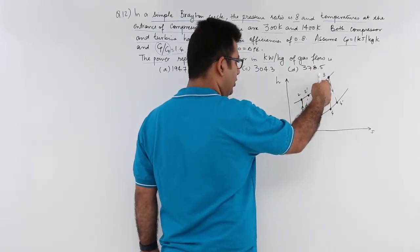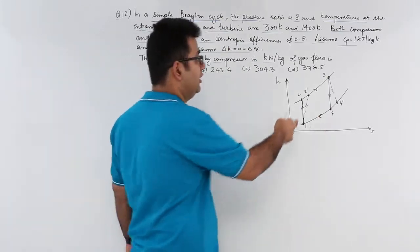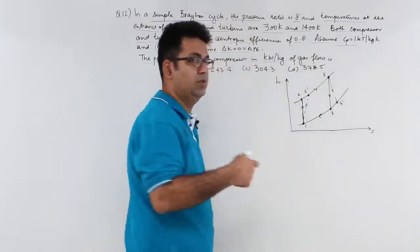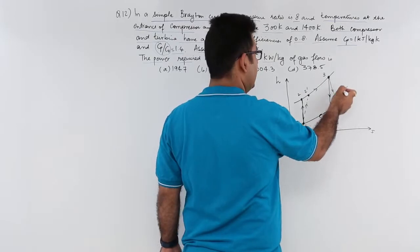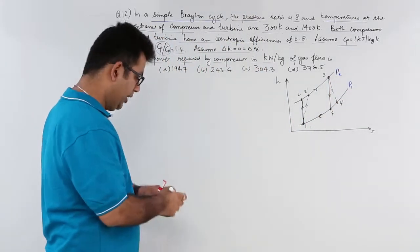Then 3 prime to 4 is the ideal expansion and 3 prime to 4 prime is the actual expansion. So these are the two pressures under which the cycle is working.